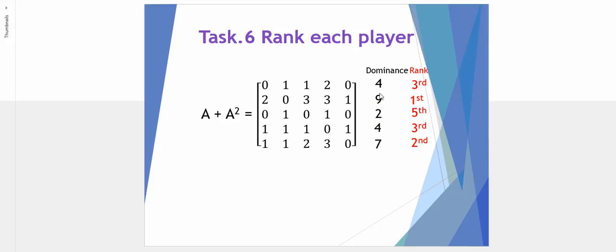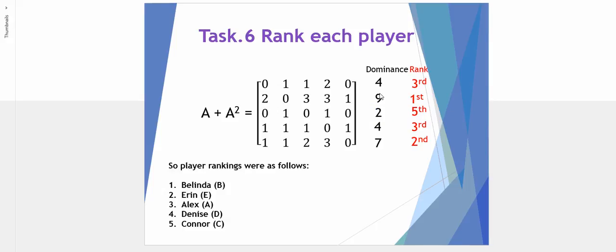Let's now tidy this back into the actual players. So the first ranking is the second row of our matrix: A, B in alphabetical, which was Belinda. Second place was our fifth row of the matrix, so A, B, C, D and E, which is E for Erin.